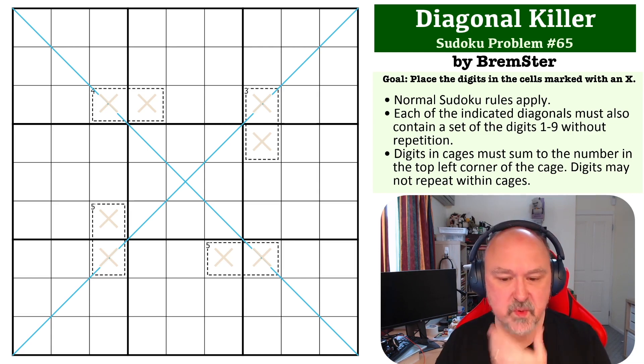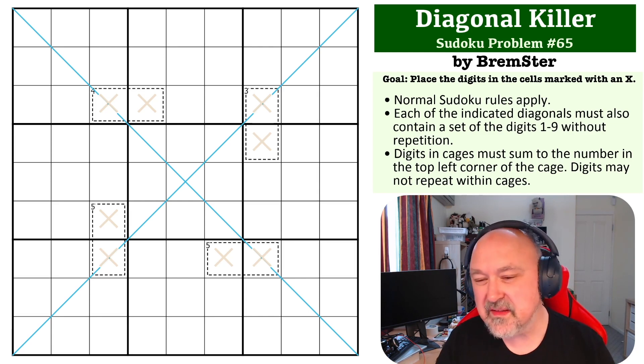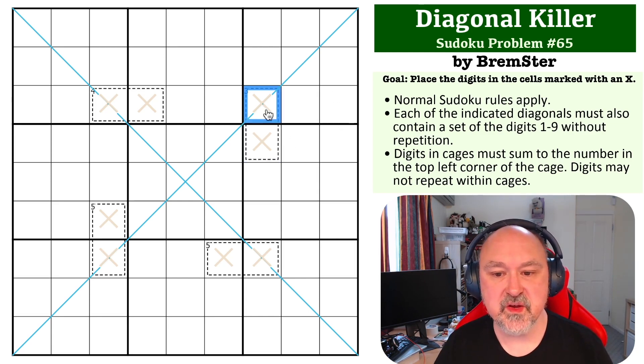Okay, so this one is based around a trick that I believe you need to solve it, but we'll see how it goes. The first thing we can do is look at this three cage and know that the only way to make up a three is with one and two.